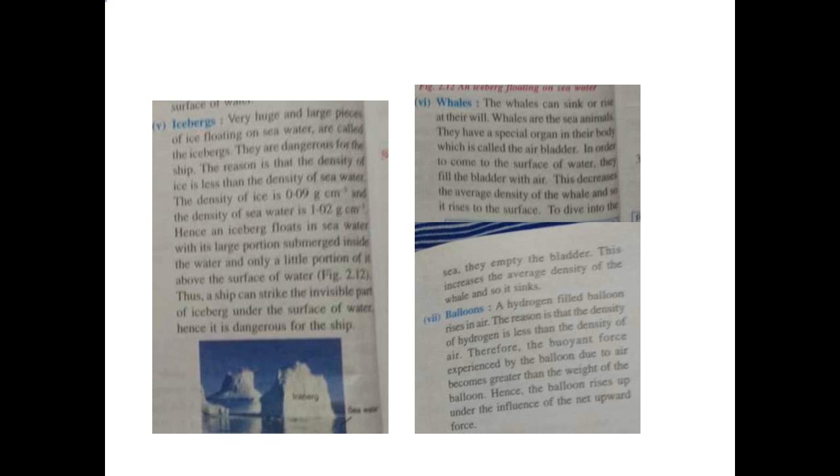The next application is about icebergs. I hope you all have seen the movie Titanic — when I read the name icebergs, I thought of that movie. When we meet in the classroom, I am going to ask you why I correlated icebergs with the Titanic movie. Very huge and large pieces of ice floating on sea water are called icebergs. They are dangerous for ships. The density of ice is 0.09 gram per centimeter cube and the density of sea water is 1.02 gram per centimeter cube.